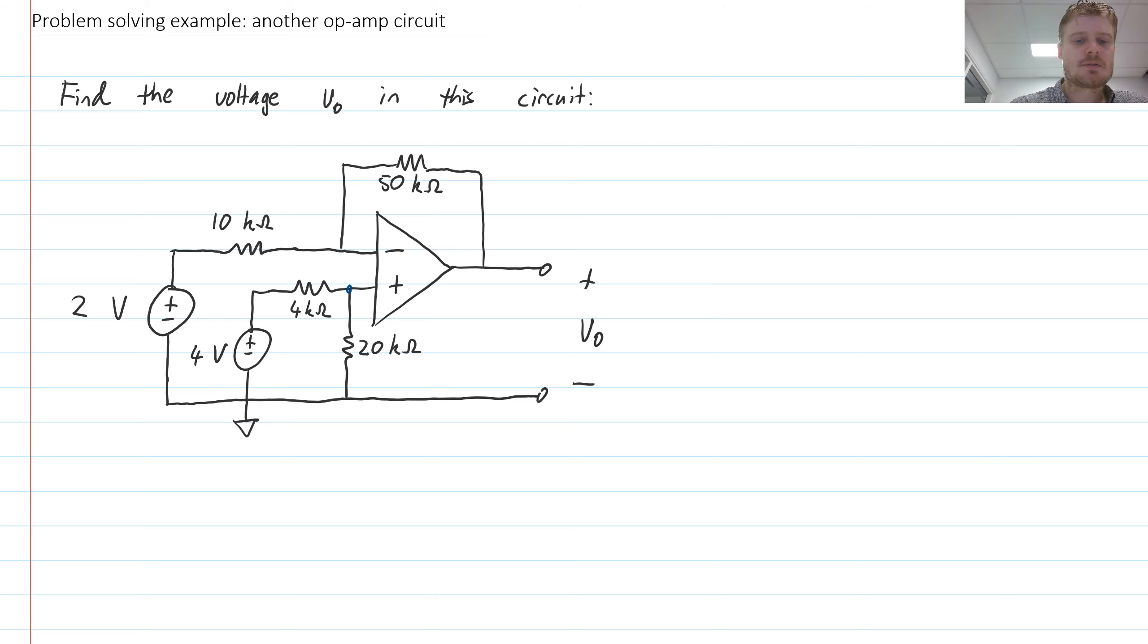Then what would you do? Well, let's work through the steps. We need to give some names to the nodes at the negative and positive terminals. I'm going to call vn for negative and vp for positive, and we work through our steps of analyzing a circuit.